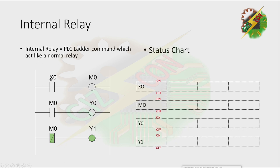Like this one. We have X0, which is an input address, and Y0 here is an output address. M0 is an internal relay, and this is the coil. Then we have two contacts: normally open and normally closed. Initially, X0 is off, M0 is off, Y0 is off, and Y1 is on, because it is connected to normally closed M0.